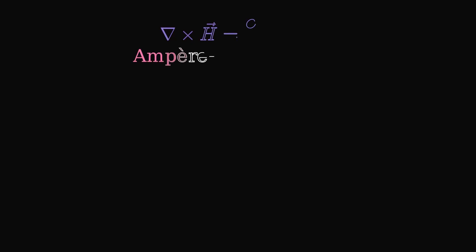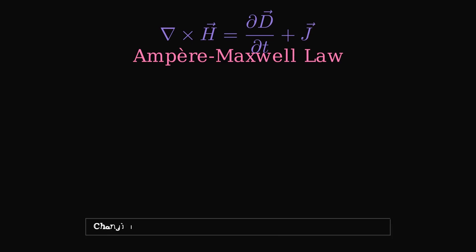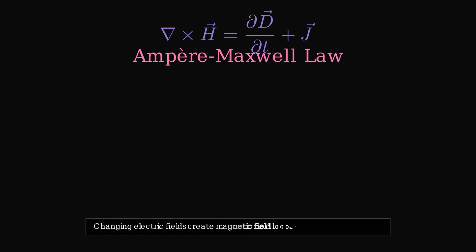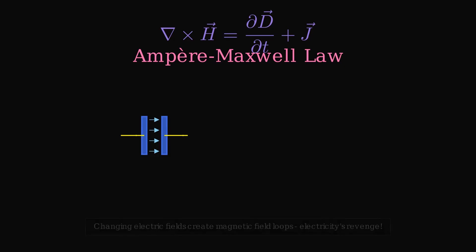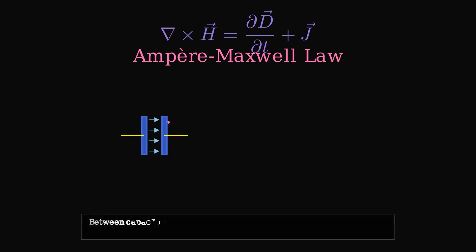Next is the Ampere-Maxwell law. Electricity's revenge. Changing electric fields create magnetic field loops around them. Consider a capacitor being charged. Between the plates, no current flows through the gap, but the changing electric field acts exactly like current. This changing electric field creates magnetic field loops around it, just like current in a wire would.